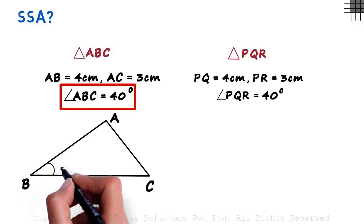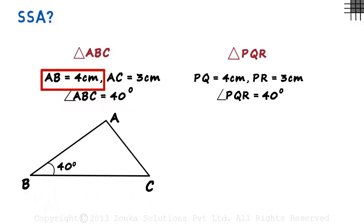Angle ABC is 40 degrees, AB is 4, and AC is 3. You can see that the angle is not included between the two sides.